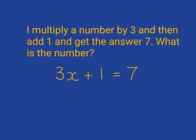Can you think what the number might be? What number when multiplied by 3 and then you add 1 to it gives you the answer 7? Hopefully you can figure that out in your head that the answer has to be 2 because 3 times 2 is 6 plus 1 gives you the 7.